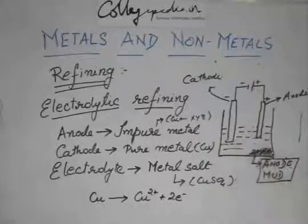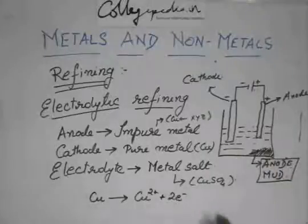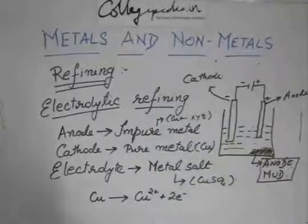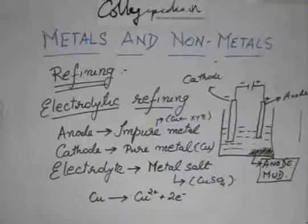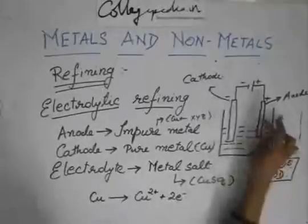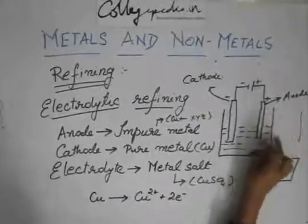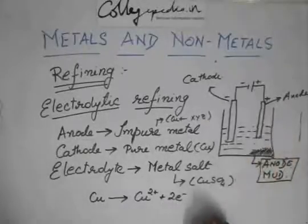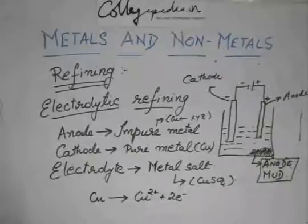They often ask you: what is anode mud? Anode mud is the impurities which are not soluble in the solution. The copper from the anode gets dissolved and becomes Cu²⁺ ions.